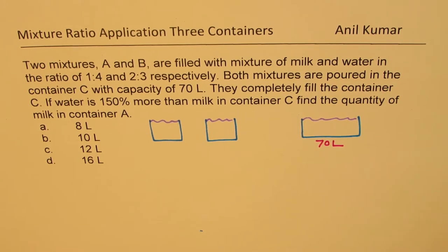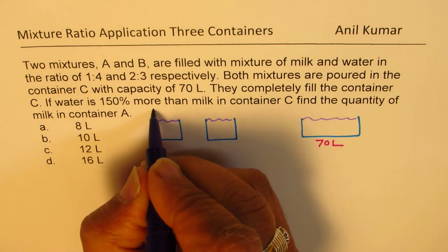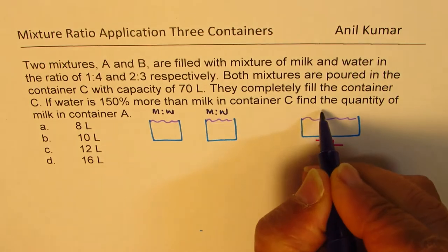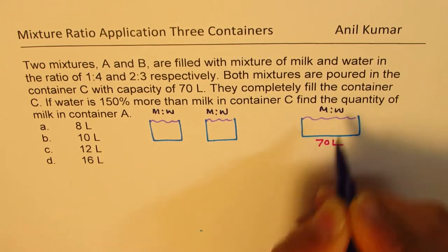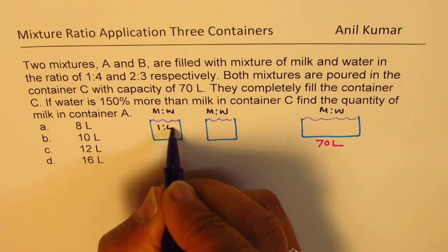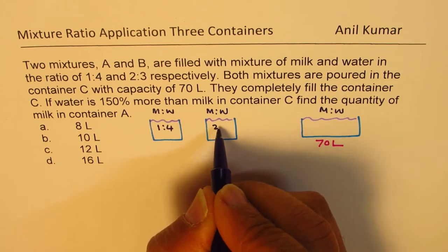Now in these containers, we have milk and water in different ratios. In this container, the ratio is 1 is to 4. In the second container, it is 2 is to 3.